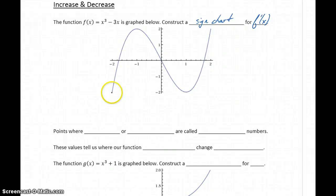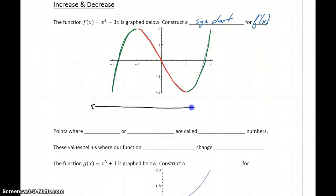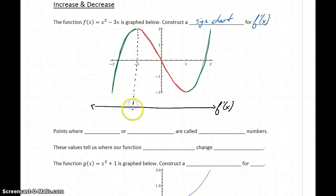Looking at our function, we can tell that on the first interval, our function is increasing up until a specific point. Then our graph changes direction and starts becoming a decreasing function. Then we hit another point where we change directions again, and our graph changes back to increasing. Keeping in mind that the derivative tells us the rate of change of our function, at negative 1, even though it's just for an instant, the graph of the tangent line for our function has to become horizontal.